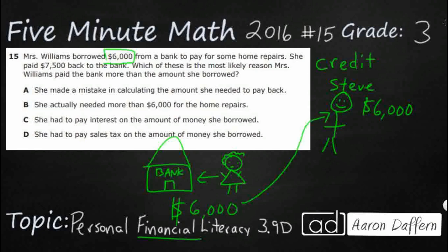Now the bank is going to need their money back, and she doesn't have it immediately — if she had that $6,000, she would have just paid Steve herself. So she had to get a loan of credit from the bank, and she's going to start paying them back monthly. They'll set her up with monthly payments, and maybe after four or five years she'll pay the whole thing off. But when she adds up all her monthly payments, instead of just $6,000, she pays back $7,500.